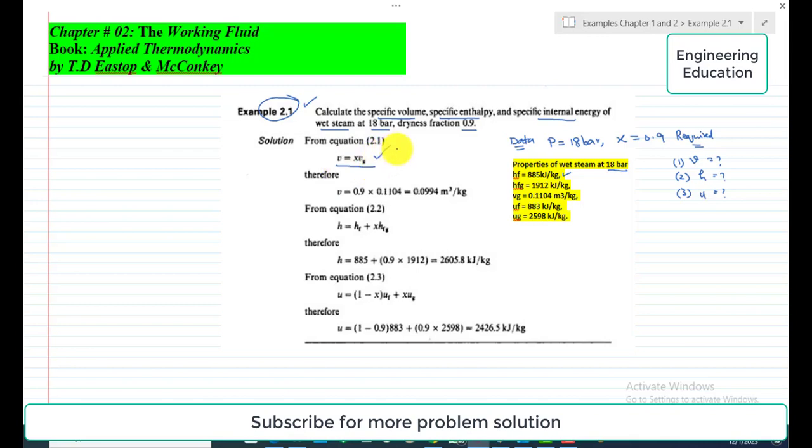To find the specific volume of the steam, we have the expression: v = x·vg. As vf is very negligible, its value is very small, that's why it's not mentioned here. vf is missing in this expression. So if we put the values of x and vg in this simple expression,